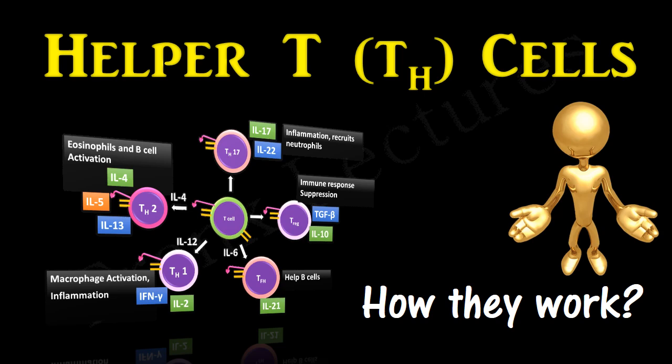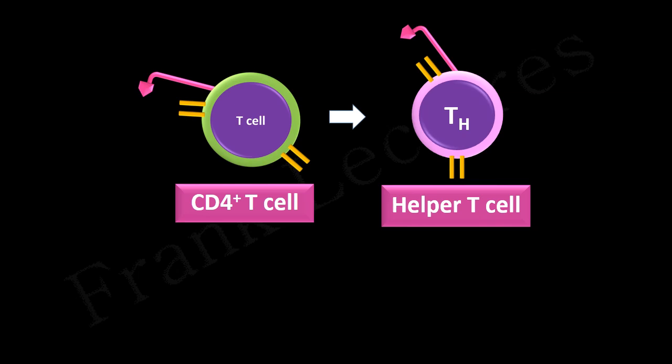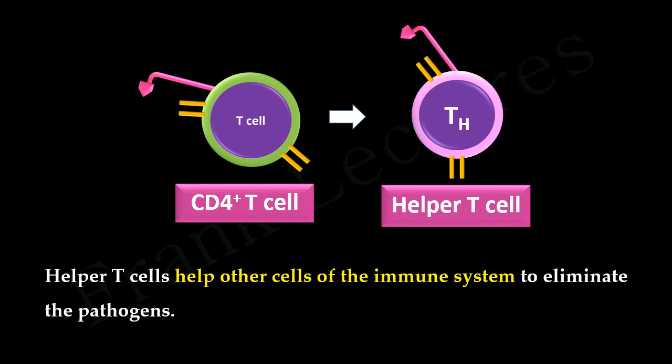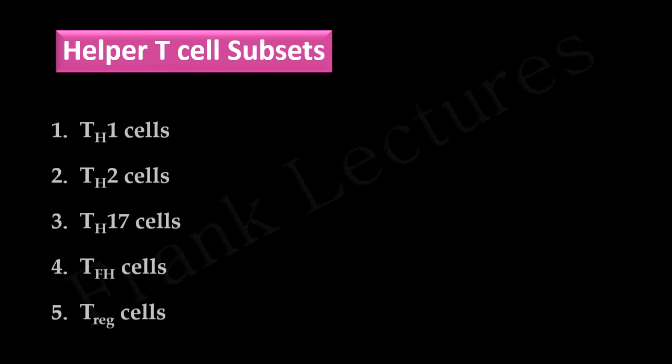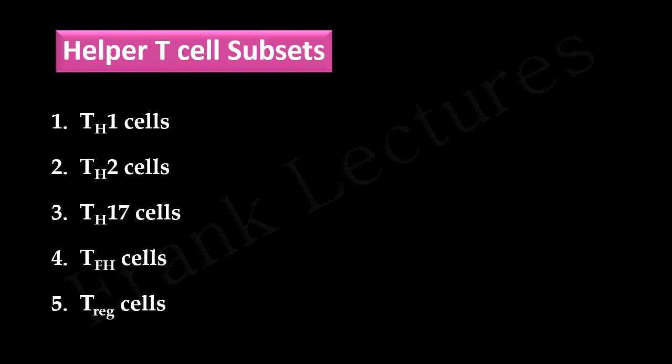Helper T cells. We now know that activated CD4 positive T cells become helper T cells. These cells are termed helper because they help other cells of the immune system to eliminate the pathogens. These helper T cells further consist of many subsets. In this video lecture we will discuss five main subsets of helper T cells.